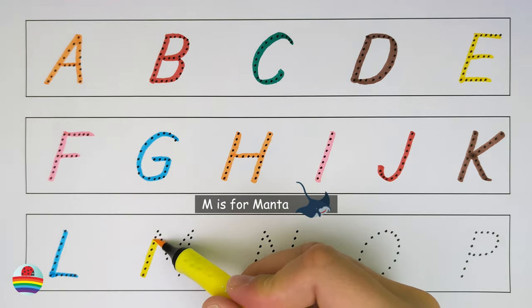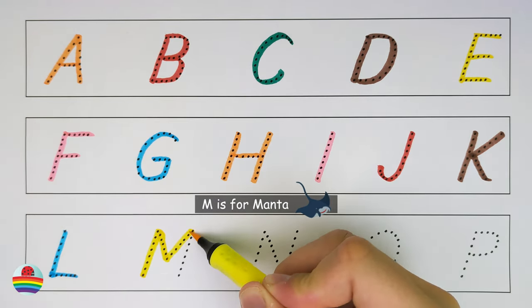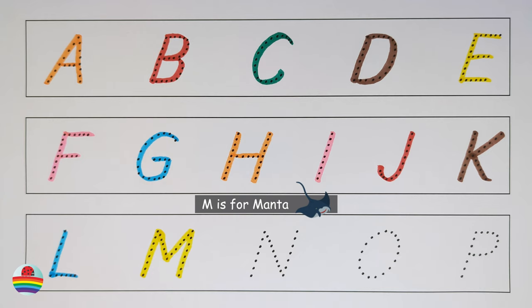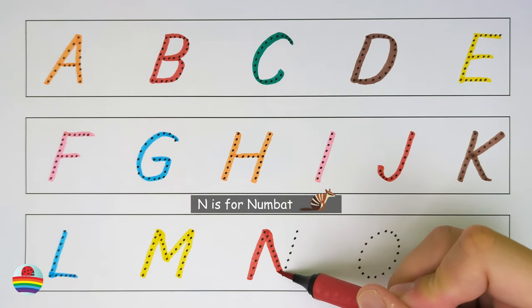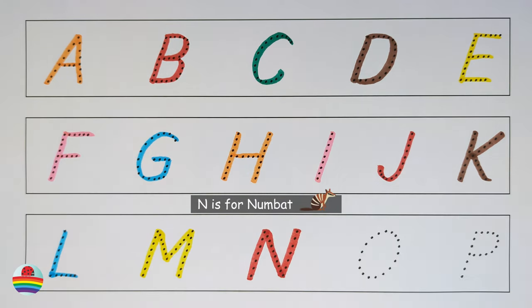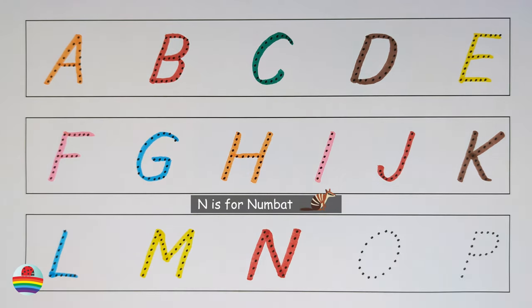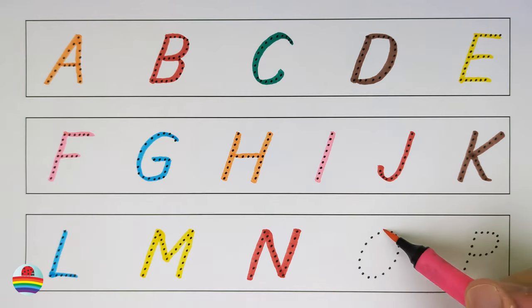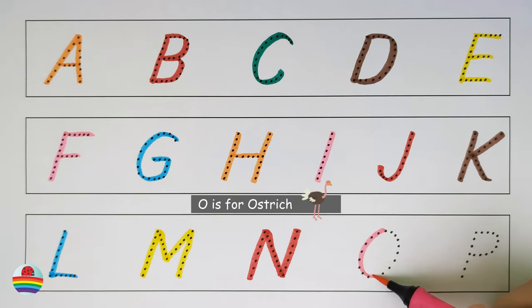M is for manta. N is for numbat. O is for ostrich.